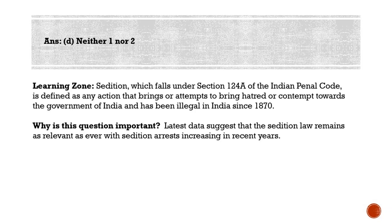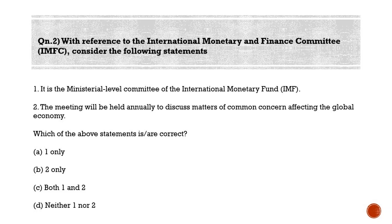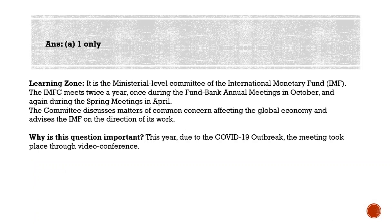Moving to the second question: with reference to the International Monetary and Finance Committee (IMFC), consider the following statements. Statement one: it is the ministerial-level committee of the International Monetary Fund (IMF). Statement two: the meeting will be held annually to discuss matters of common concern affecting the global economy. The correct answer is option A — one only. The IMFC is indeed the ministerial-level committee of the IMF. It meets twice a year: once during the Fund-Bank annual meetings in October and once during the spring meetings in April.